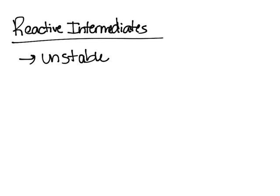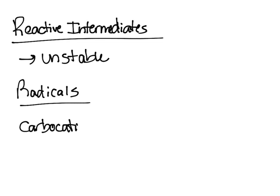But we can talk about stability within the intermediate group. There's three types we're going to talk about: radicals, carbocations, and carbanions.